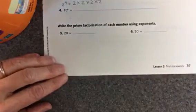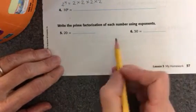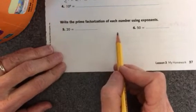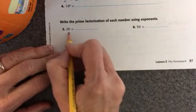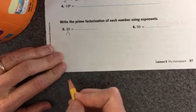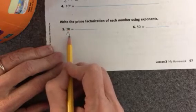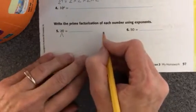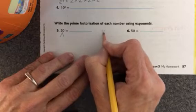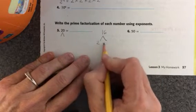The next two are prime factorization, which means doing a factor tree, and then writing the prime factorization as an exponent. So you would take your, make two branches, and then you're going to think of two numbers that you would multiply to be 20. I'm going to do an example right here, and I'll do 16.